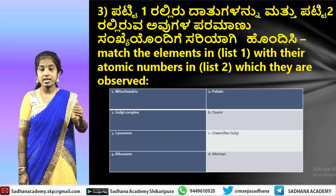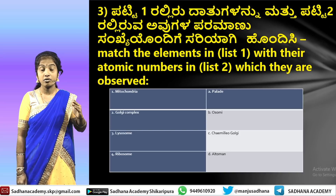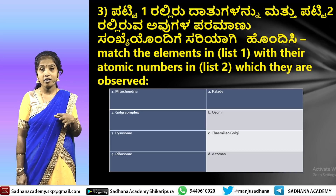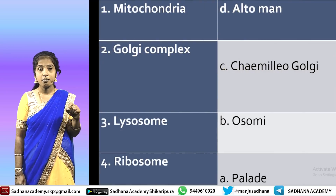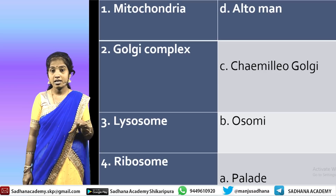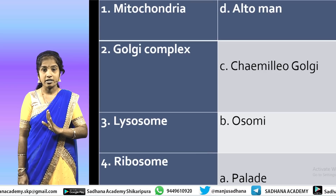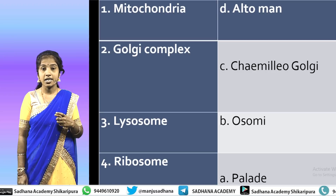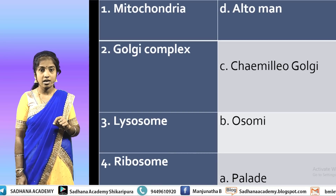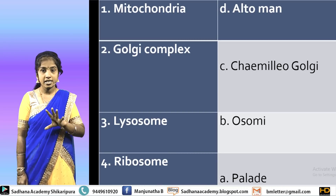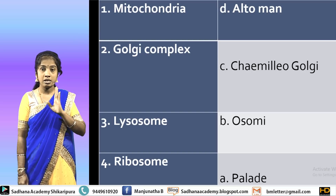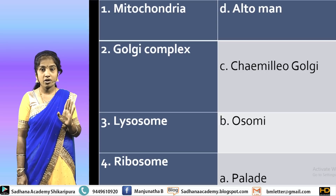The next one — match the following: cell organelles — one side has the organelle, the other side has who discovered it. Mitochondria — powerhouse of a cell — it was discovered and named by Karl Benda, and Altmann studied it in detail. So both scientists Karl Benda and Altmann are related to mitochondria, the powerhouse of the cell.